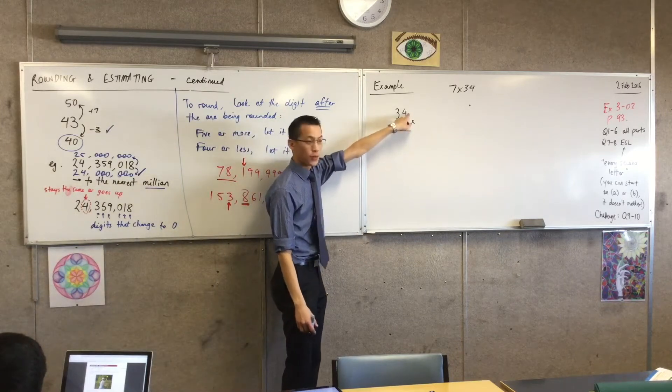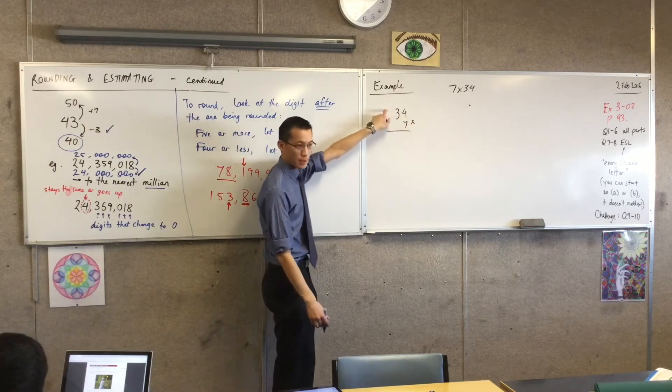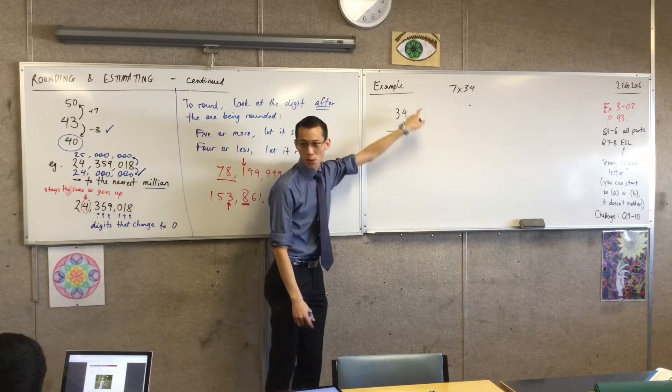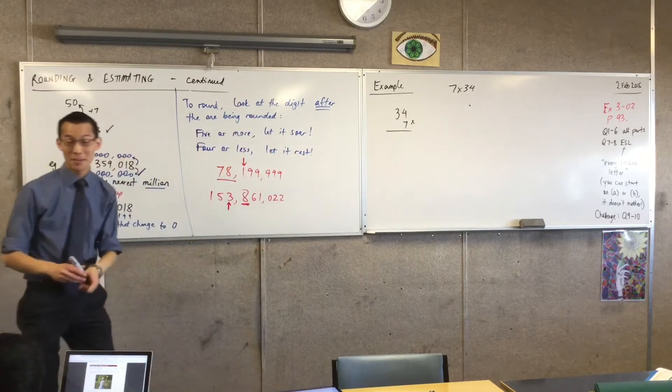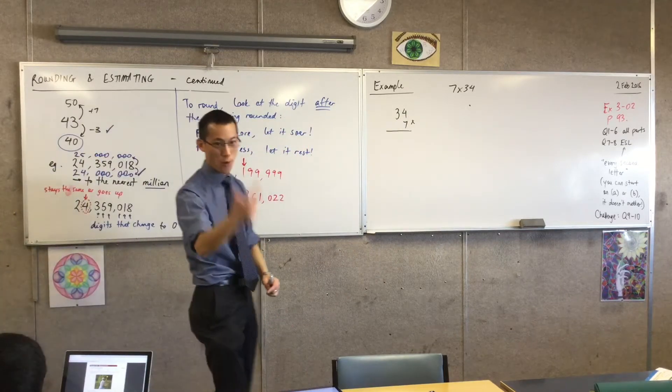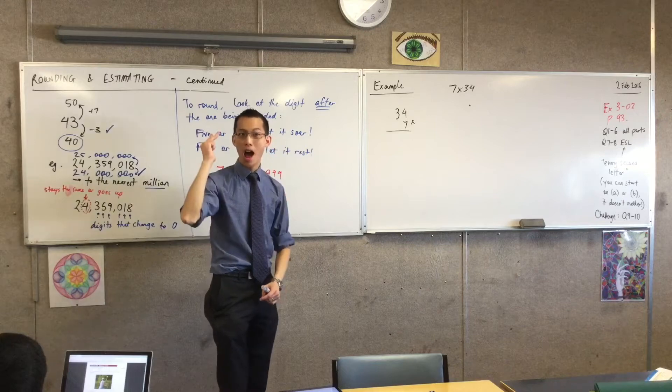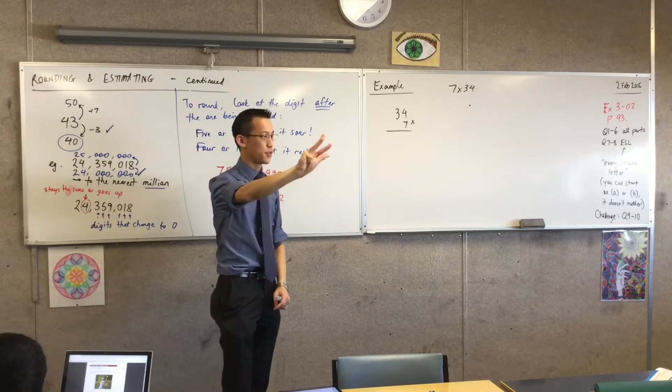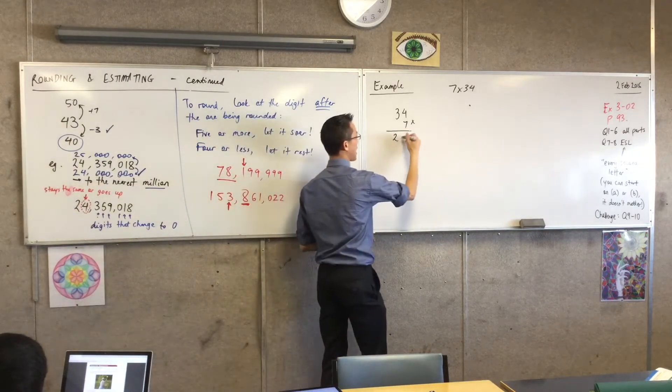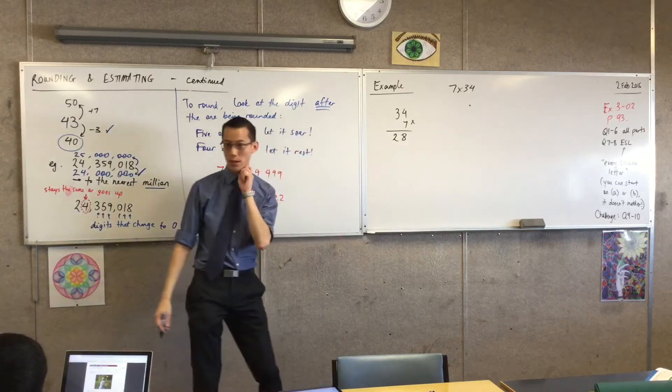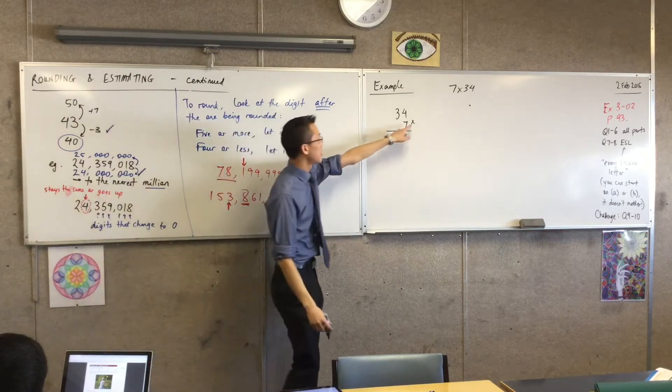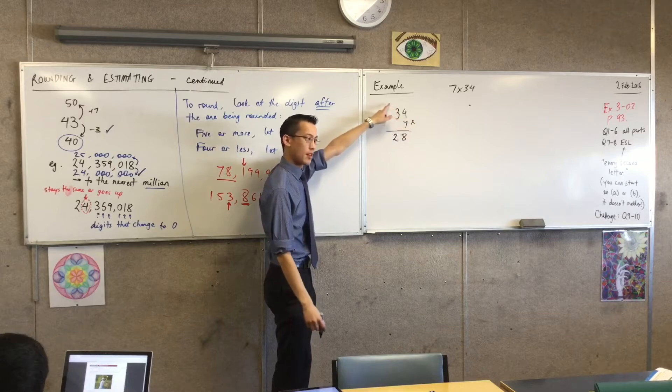So I'll do 7 times 4, then I'll do 7 times 30. 7 times 4, my 7 times table: 7, 14, 21. 28 is the fourth one. So 28 is 7 times 4, that's what I put under me. I've done the 7 by 4, now I'll do the 7 times 30.